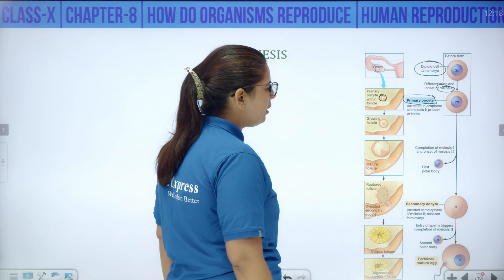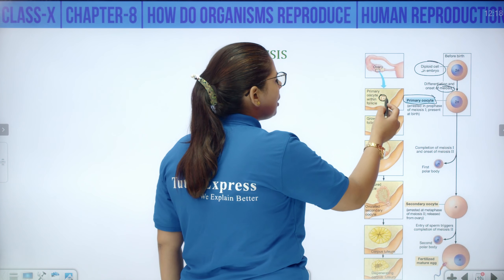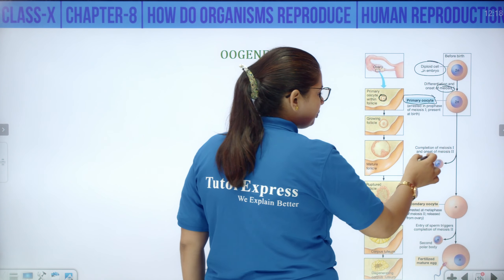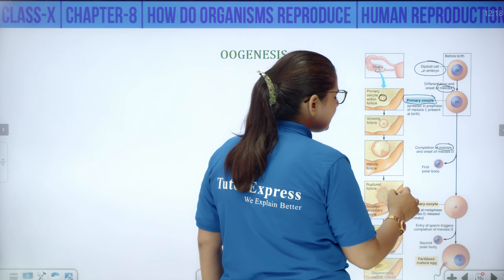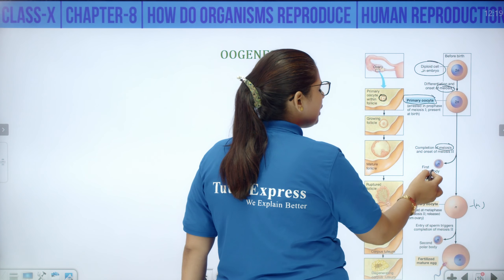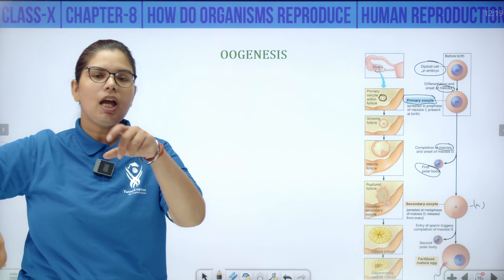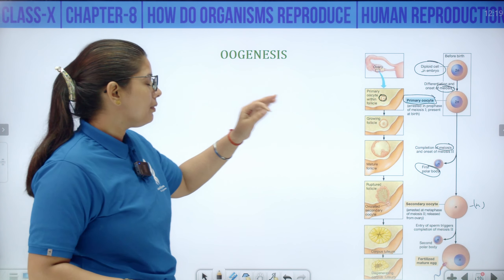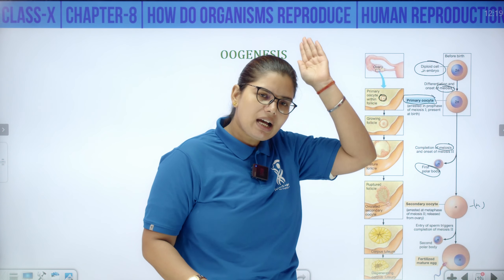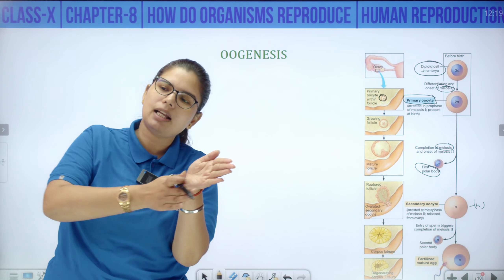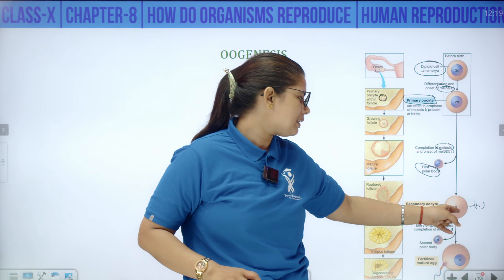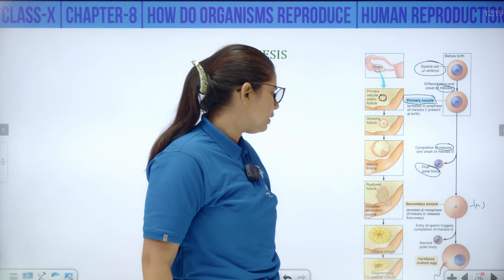She is born with primary oocytes already formed. The follicle keeps growing. When the menstrual cycle starts, meiosis 1 is completed — producing a secondary oocyte (haploid) and a first polar body. So the primary oocyte was formed even before birth, arrested at meiosis 1 until the girl reached 10-12 years and menstruation began.